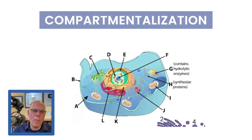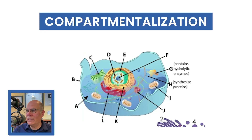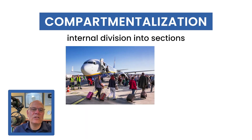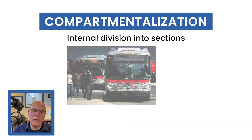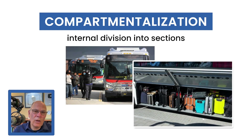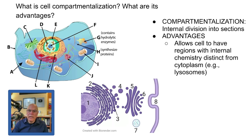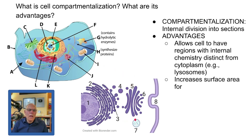Let's talk about compartmentalization. Take the word apart and it'll tell you what it means — internal division into sections, like a luggage compartment on a plane or bus. The advantages of compartmentalization allow cells to have regions with internal chemistry distinct from the cytoplasm. For example, the lysosome is filled with hydrolytic enzymes — like an internal digestive organ. You don't want those hydrolytic enzymes released into the cytoplasm because they would break it down, so the cell handles that through compartmentalization.